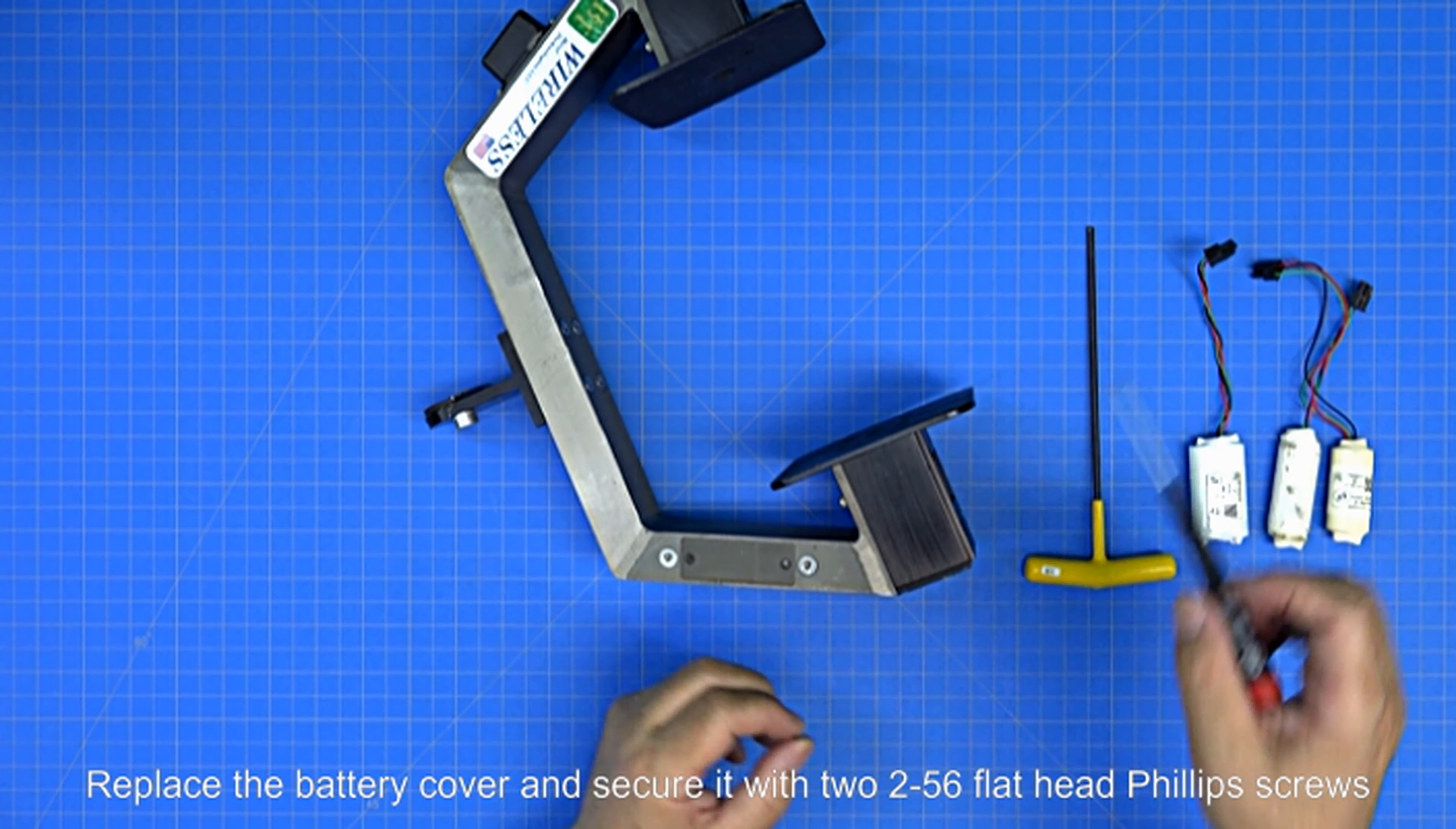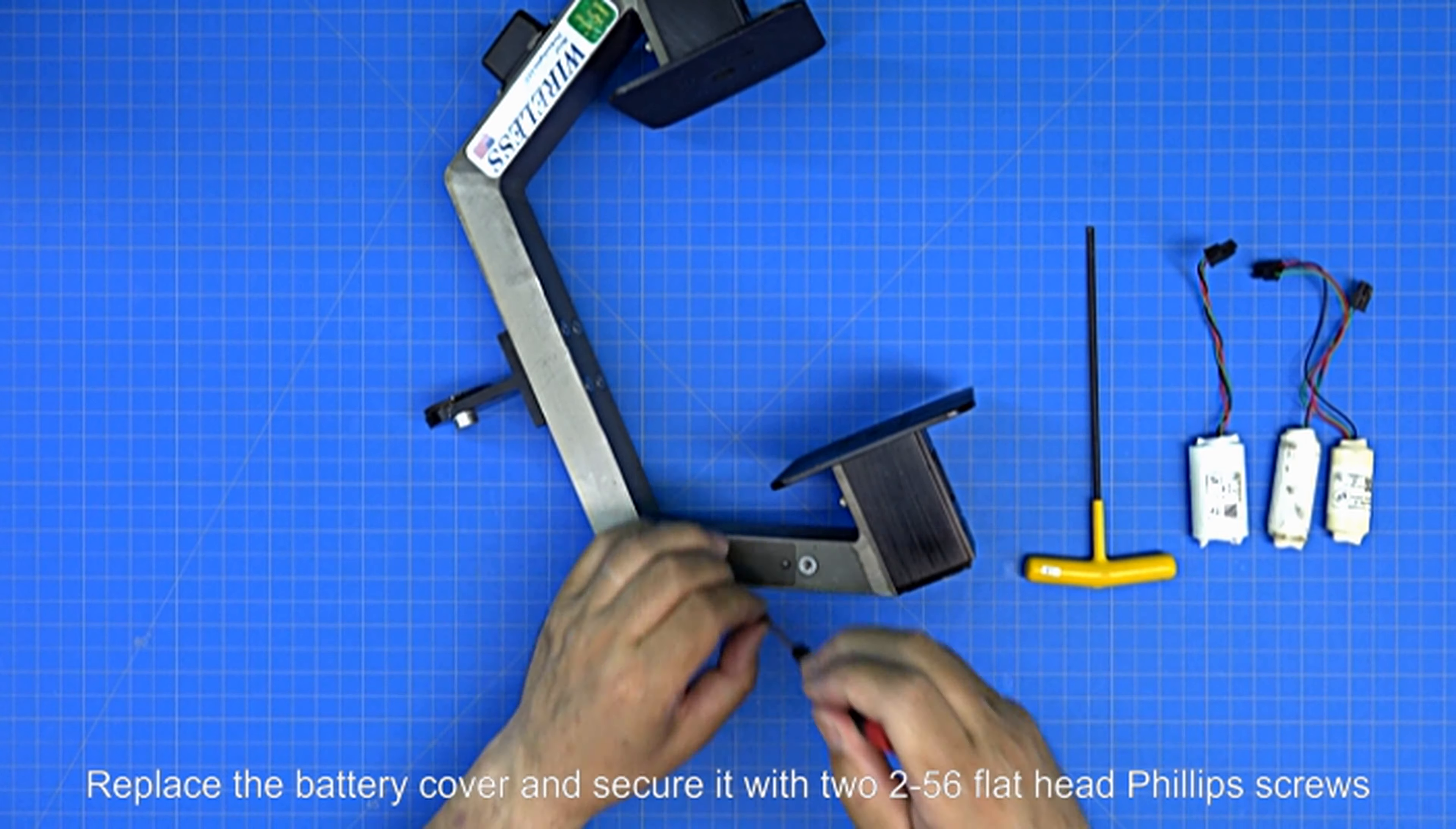Replace the battery cover and secure it with the two 2-56 flat head Phillips screws.